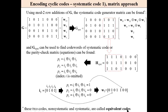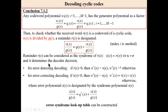These two codes — non-systematic and systematic — are called equivalent codes. For decoding, recall that any codeword polynomial has the generator polynomial as a factor, so the remainder is zero. To check whether a received word v is a codeword, it is enough to divide this word by the generator polynomial. The remainder can be considered as the syndrome of the received word and determines the decoder decision. For error-detecting decoding: if the remainder is zero, there is no error; if the remainder is non-zero, an error has occurred.